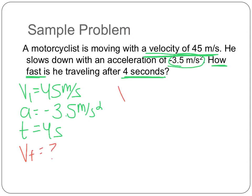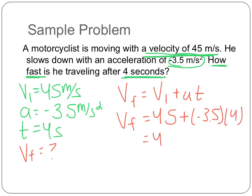So I'm going to use the same equation as before. I do not have delta X, so this is my only equation I can use. So I have 45 plus negative 3.5 times 4. So remember, I'm doing my multiplication first. And for my answer, I'm going to get 31 meters per second.